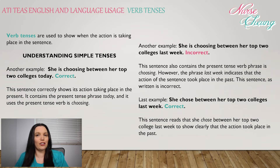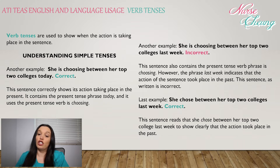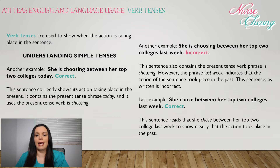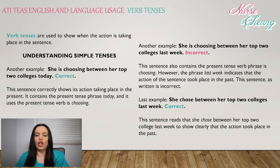'She is choosing between her two top colleges today.' — that's correct. The sentence shows its action taking place in the present, using the present tense phrase 'today' and the present tense verb 'choosing.' However, 'She is choosing between her two top colleges last week' doesn't make sense — 'last week' indicates the action took place in the past, so the present tense verb is incorrect. The correct version is: 'She chose between her two top colleges last week,' using the past tense verb 'chose.'